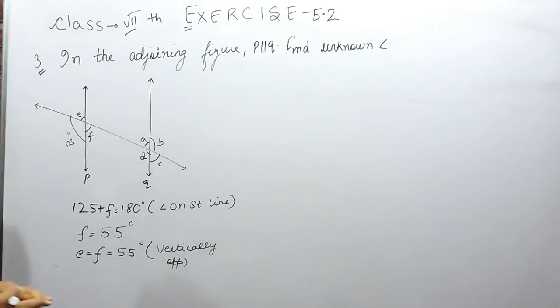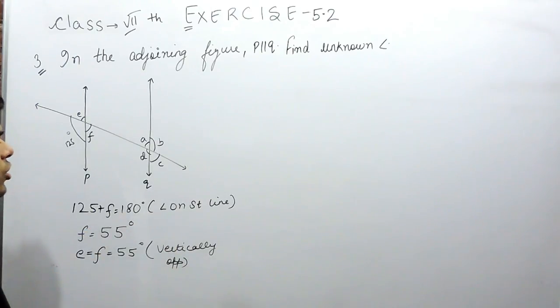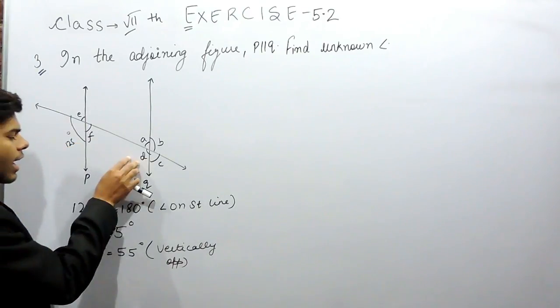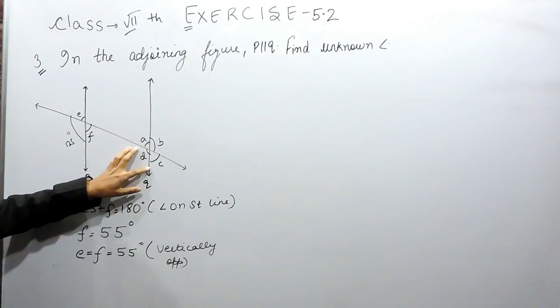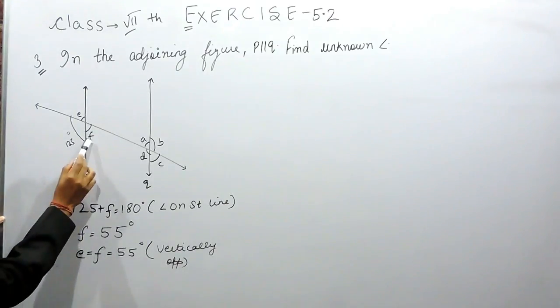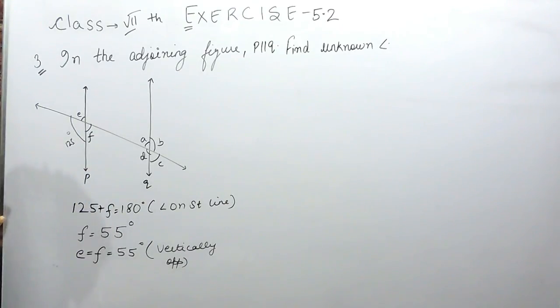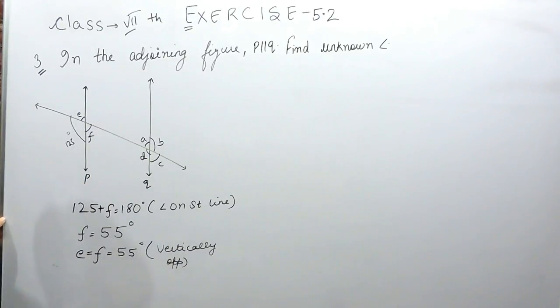Now, supposing you are unaware of this property that angle on a straight line is equal to 180 degrees, but you know what corresponding angles are. You can find this as corresponding angles: 125 degrees and angle D form corresponding pairs. So D is equal to 125 degrees, and after that, F plus D is equal to 180 degrees because they are sum of interior angles.